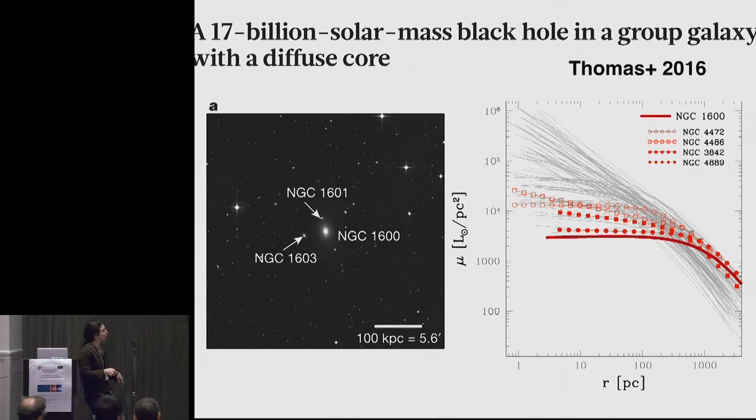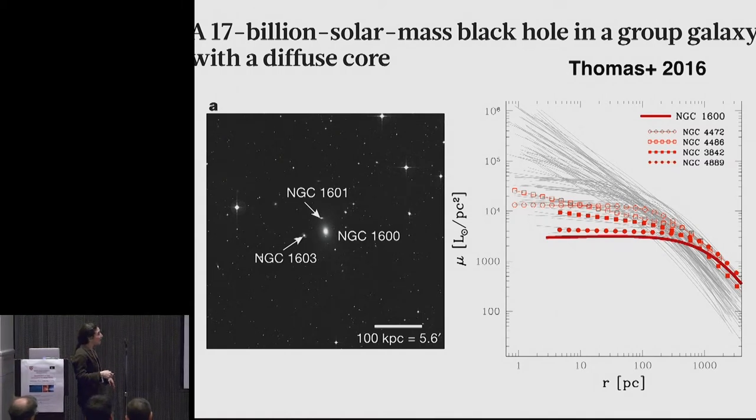We have indirect evidence for tight pairs of black holes from looking at the light profiles of massive galaxies. So this is my favorite supermassive black hole in the galaxy NGC 1600.